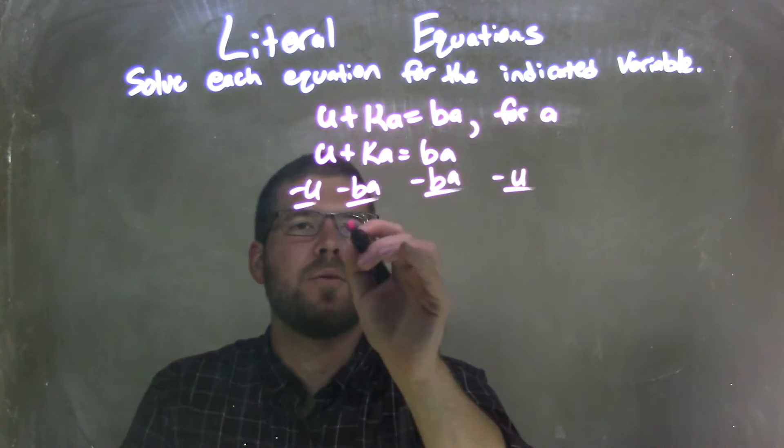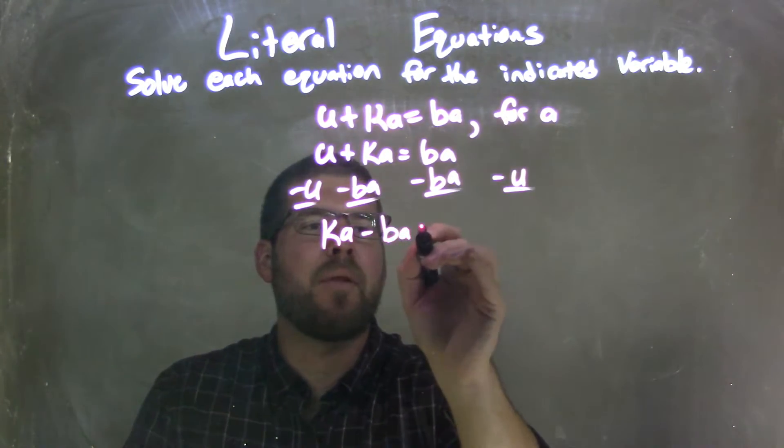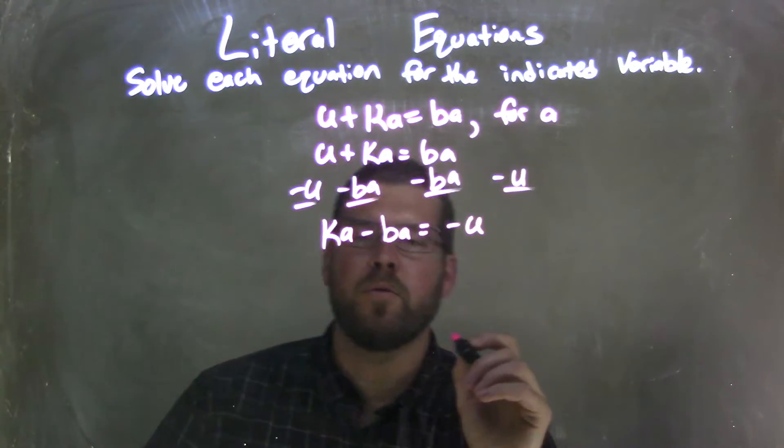And what that's going to do is leave me with a ka minus ba on the left and a negative u on the right.